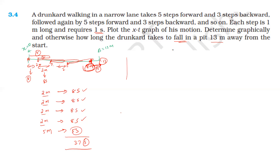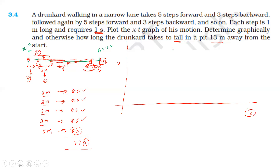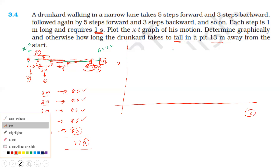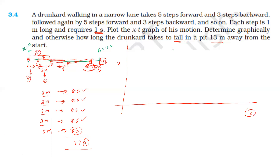On the graph: the y-axis represents distance and the x-axis represents time. The graph is a straight-line graph when averaged, since each step is at constant speed. Each forward phase is 5 seconds and each backward phase is 3 seconds, making an 8-second cycle.